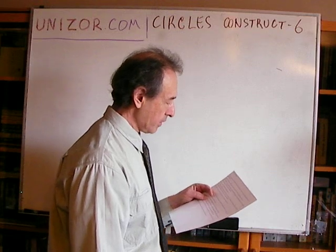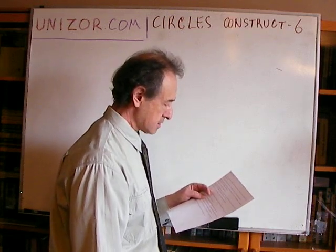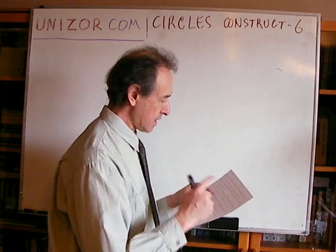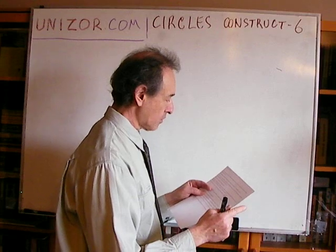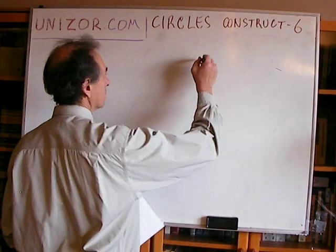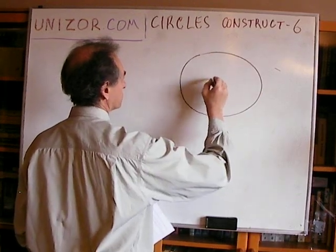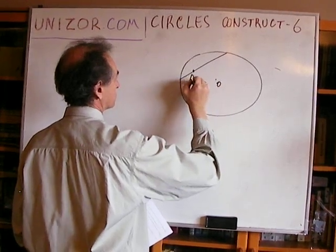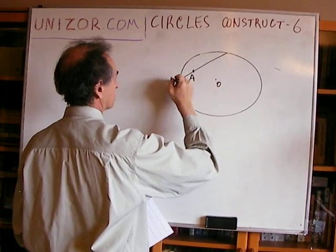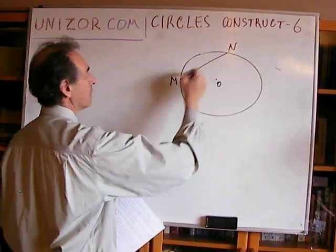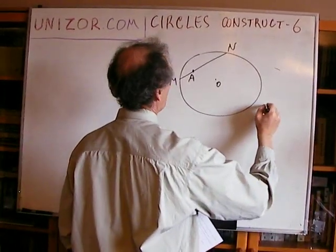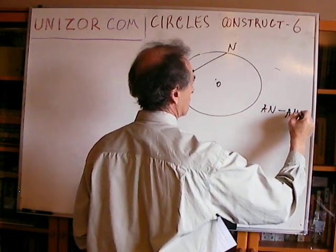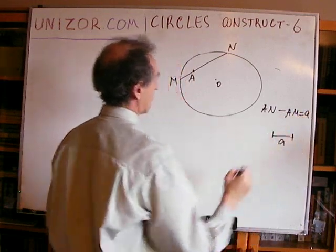Given a circle and a point inside it, construct a chord containing this point, such that the difference between the two segments the given point divides the chord is equal to a given segment C. So you have a circle, you have a point. You have to build a chord MN in such a way that AN minus AM equals the given segment A.